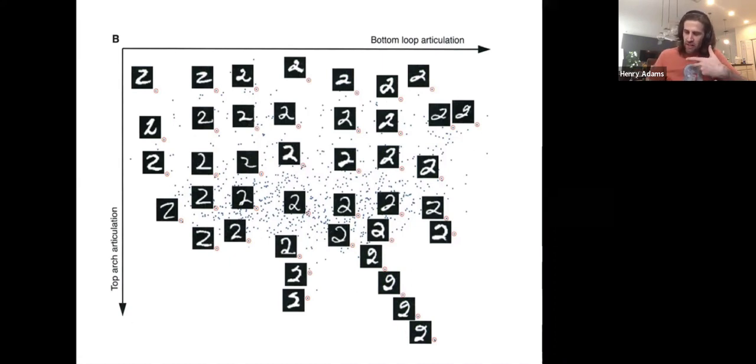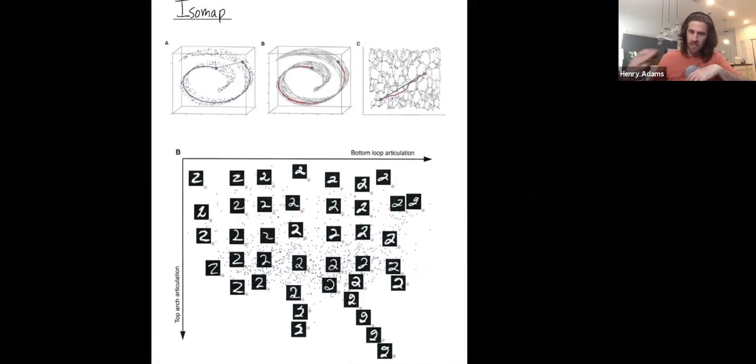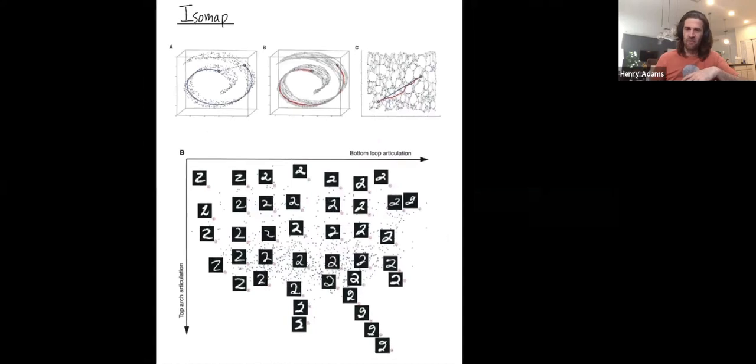So let me clarify that these interpretations were not hard-coded into the ISOMAP algorithm. ISOMAP was just trying to solve an optimization problem, and it did. But after the fact, you can try to interpret these nice coordinates that ISOMAP has seemed to find. It gives you a better understanding of your data.